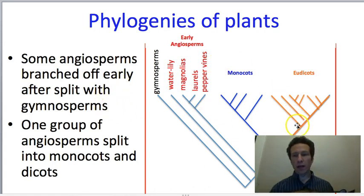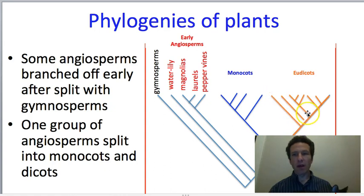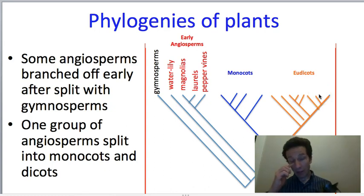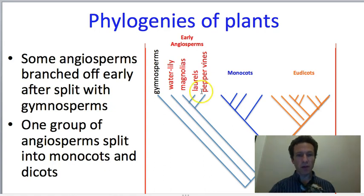Within the eudicots, we're going to talk about one group that diverged fairly early—the poppy family—then one family on each of the two main branches: the rose family and the carrot family. There are literally hundreds of other families I could have chosen to talk about, so this is a really small sampling of the diversity within the eudicot clade.